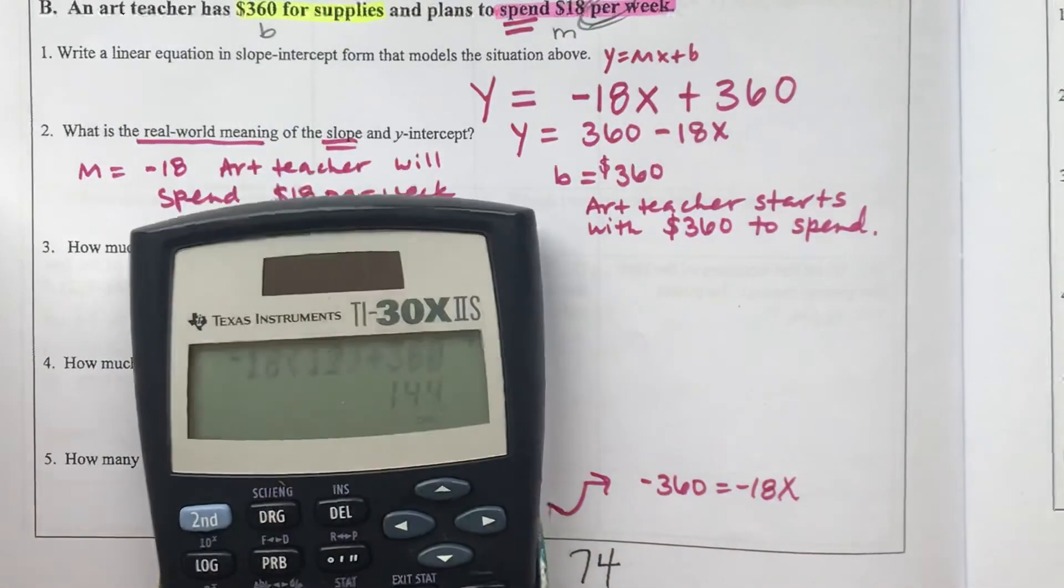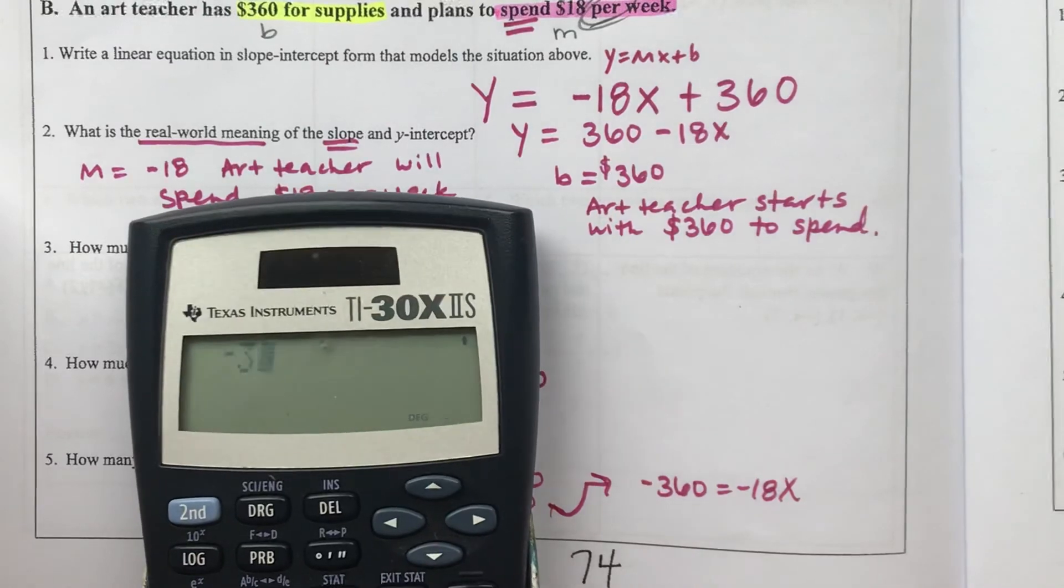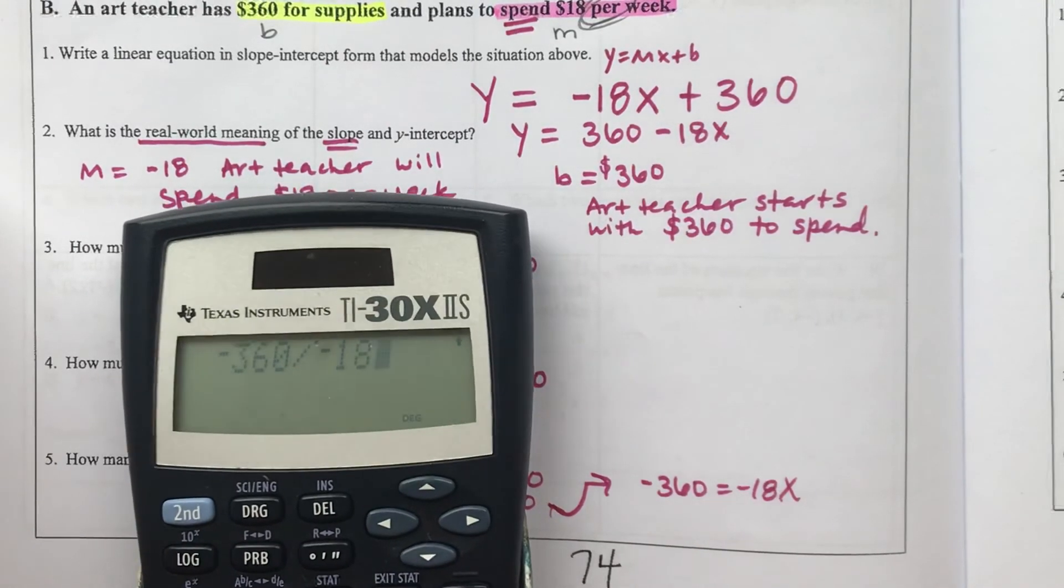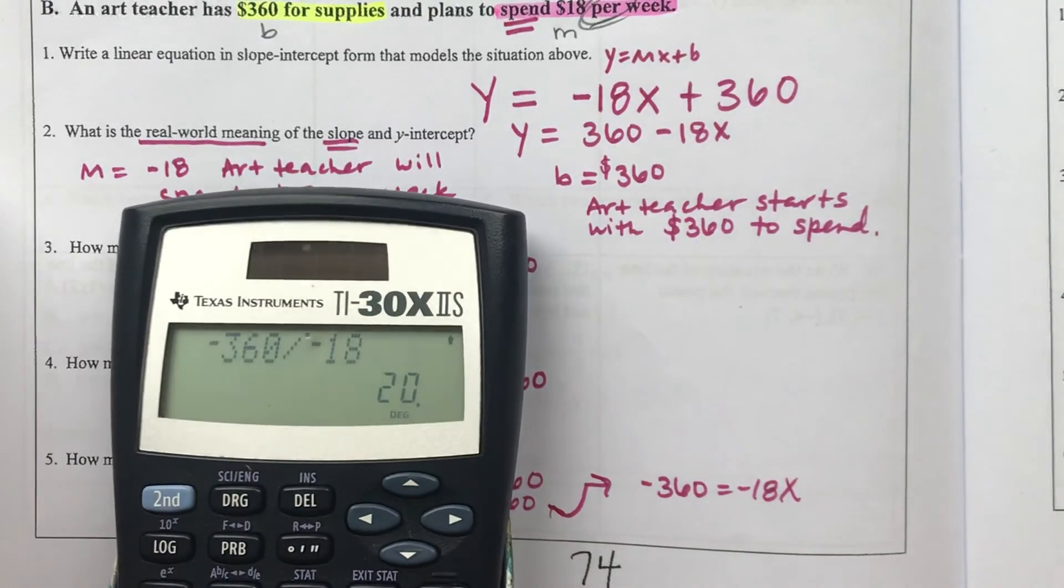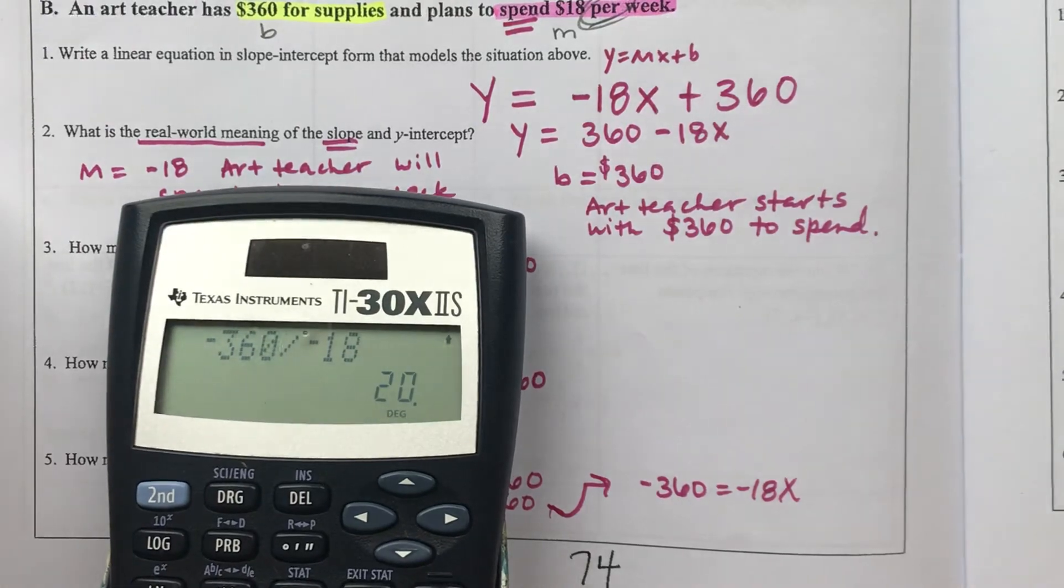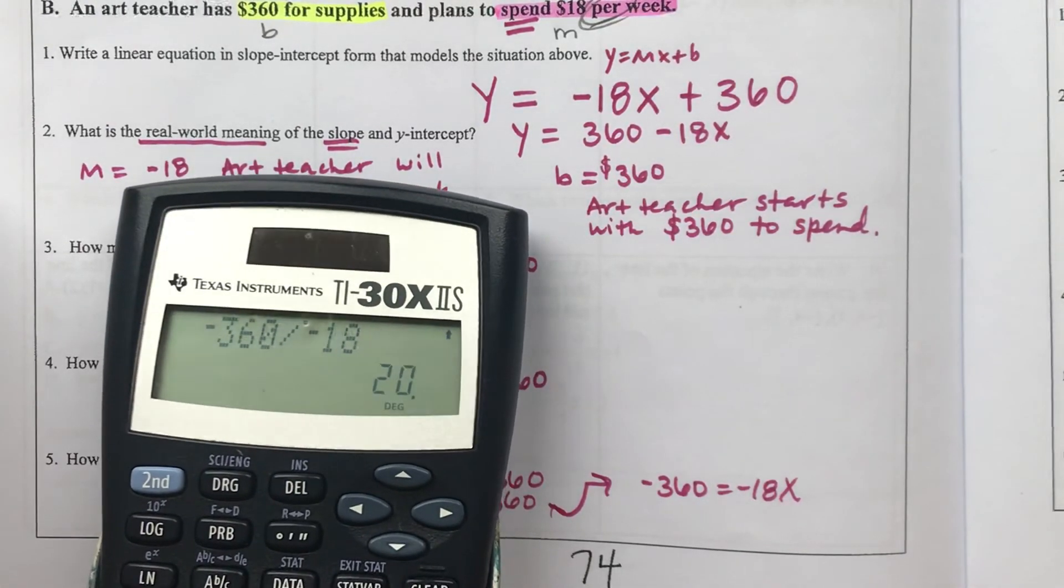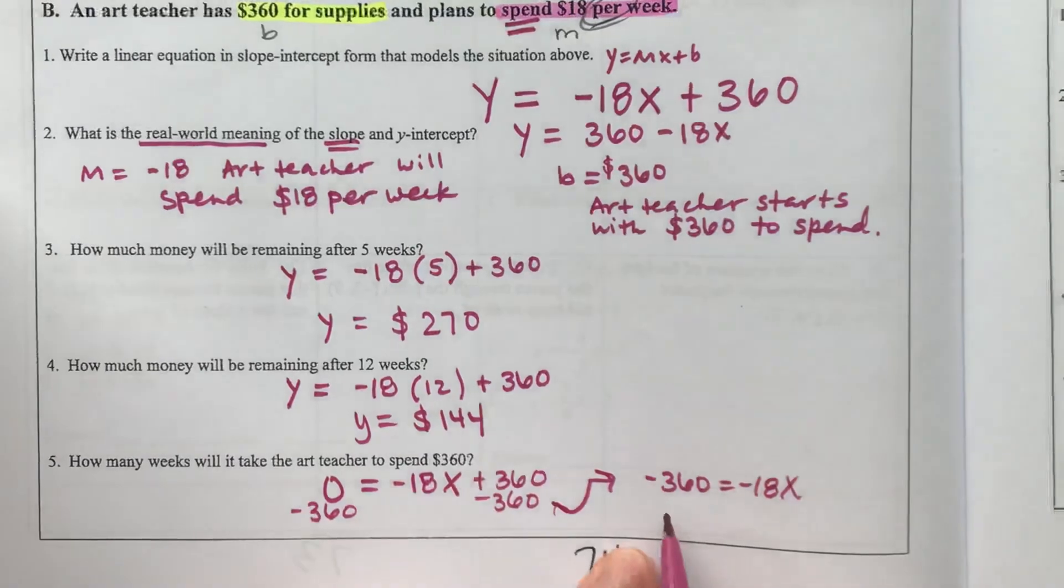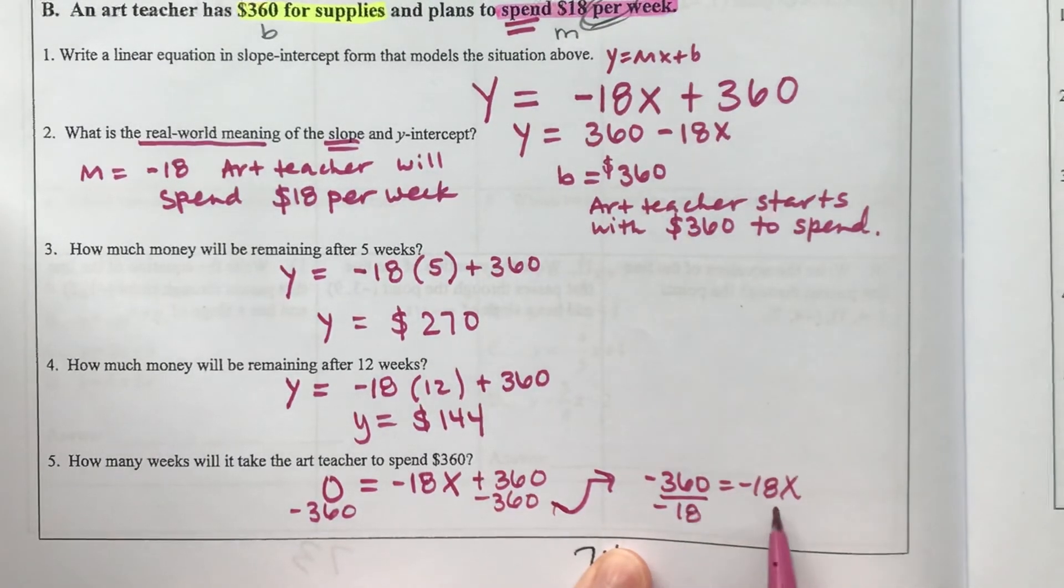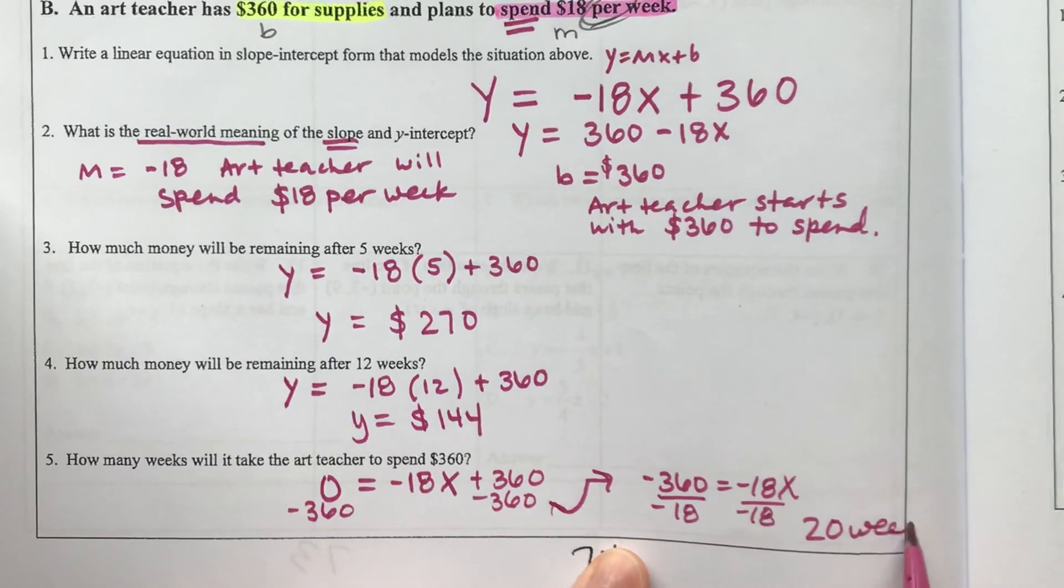Dividing both sides by -18: -360 ÷ -18 = 20 weeks. So the teacher can spend money for 20 weeks, and after that, the money will be gone.